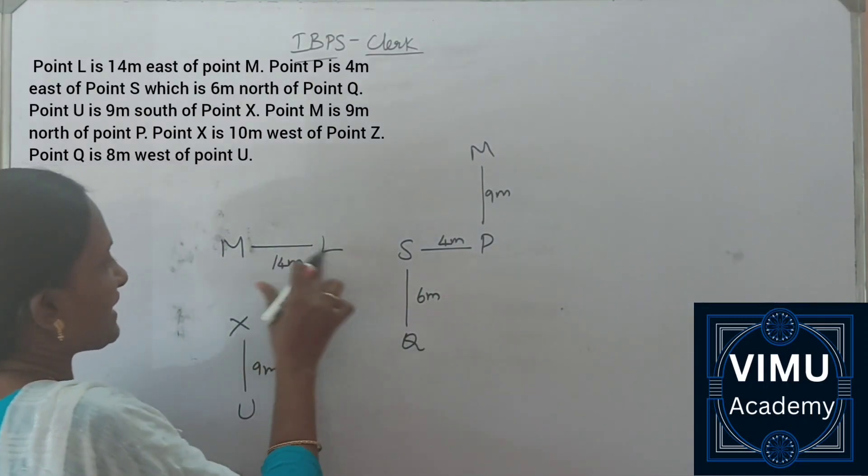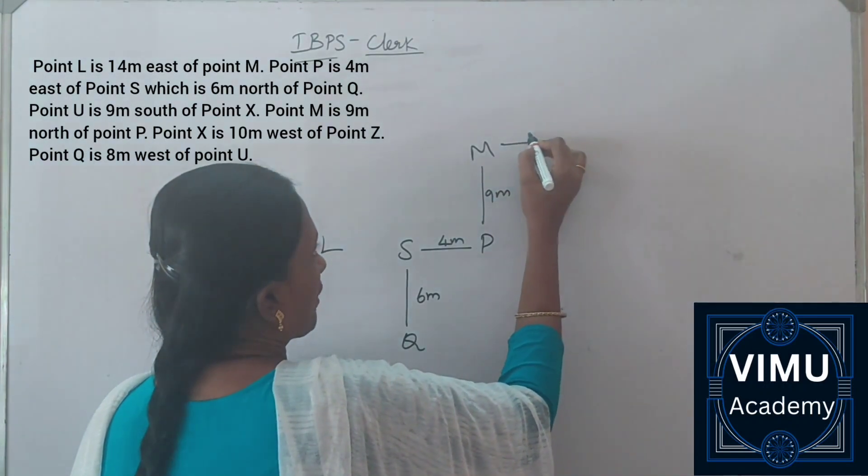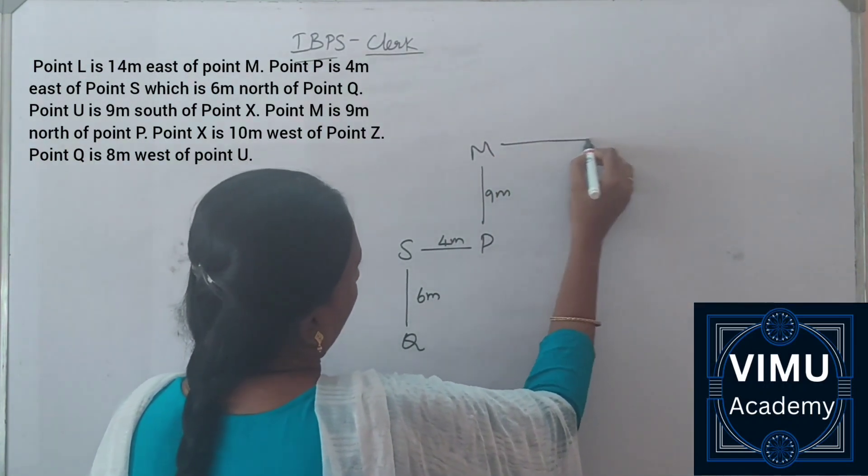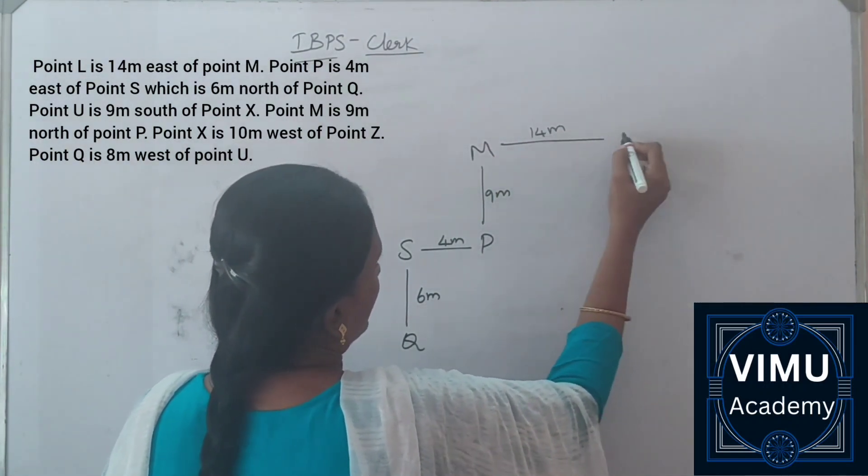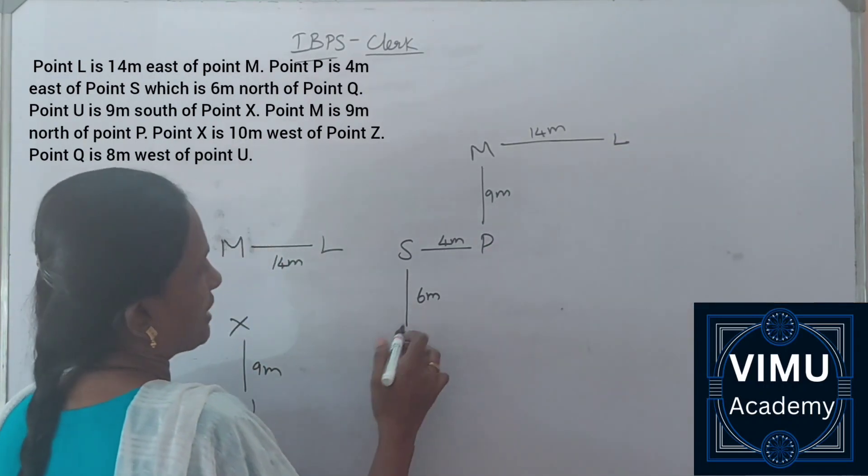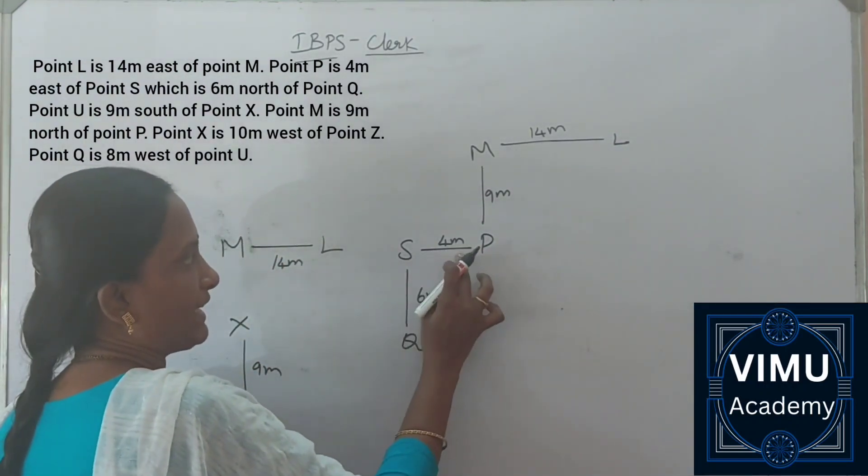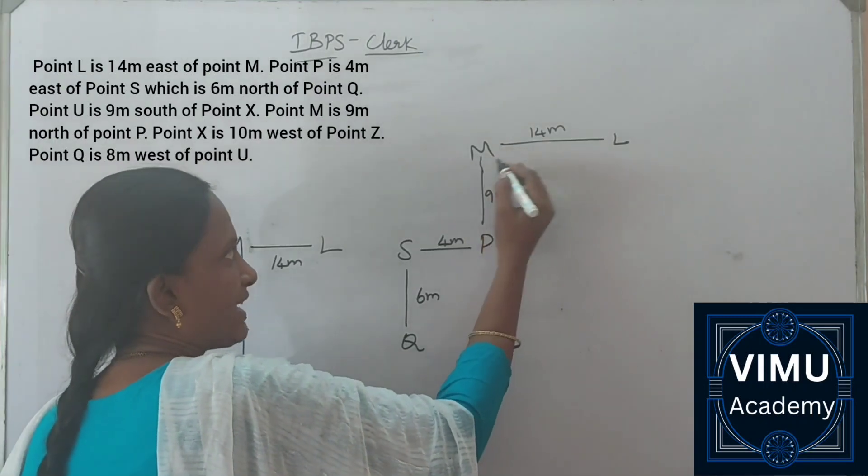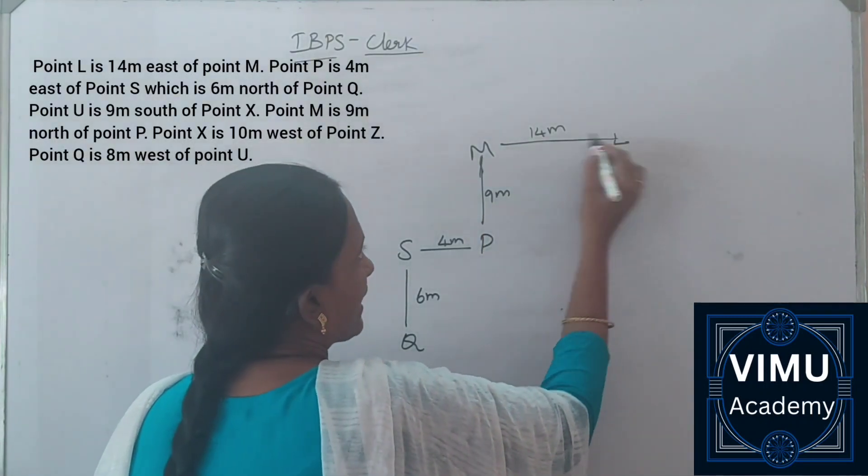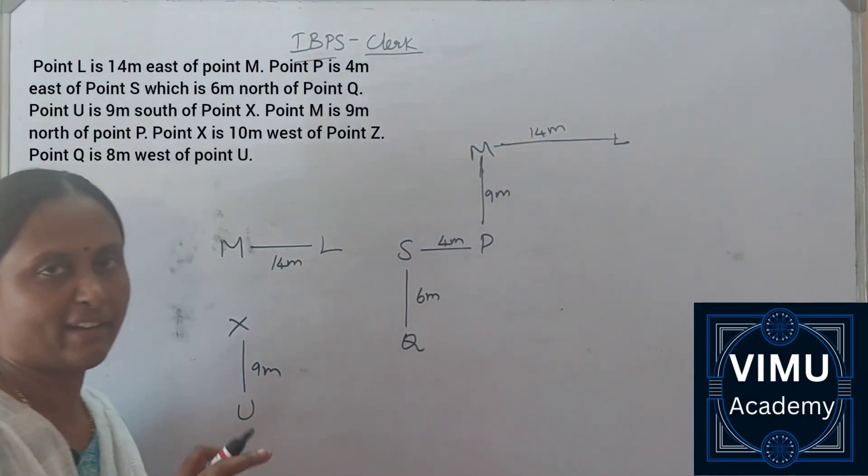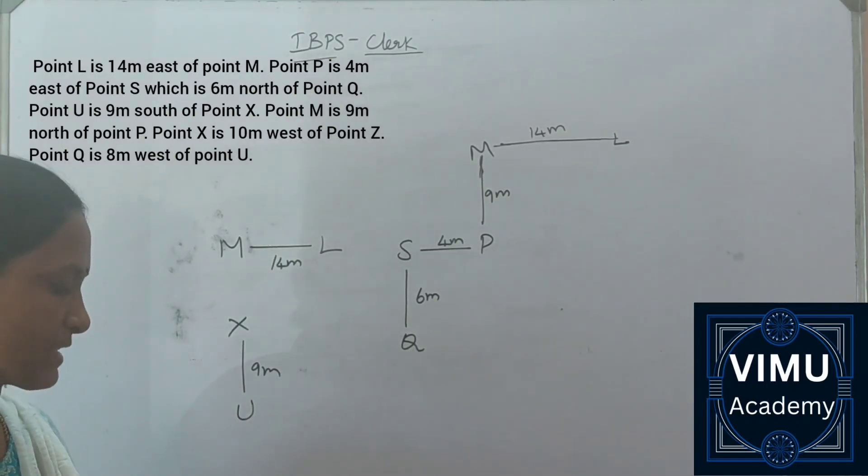Here's M, which is 14 meters from L. We need to look at this carefully - 6 meters, 4 meters, 9 meters, 14 meters. M is 9 meters north of point P.